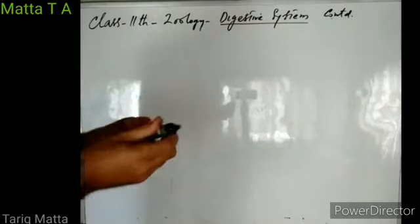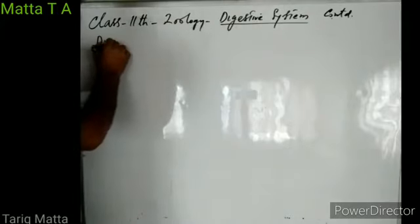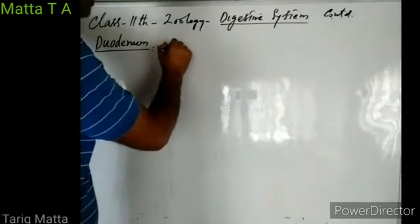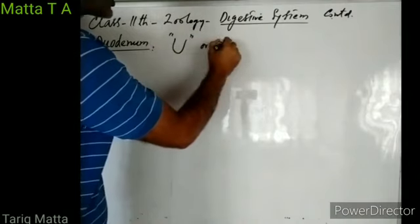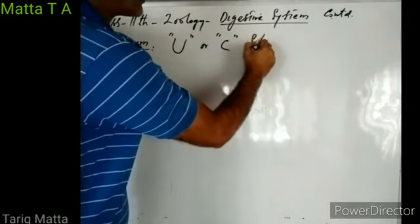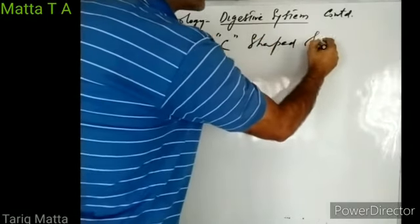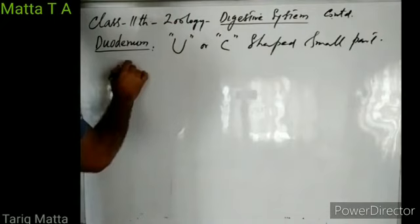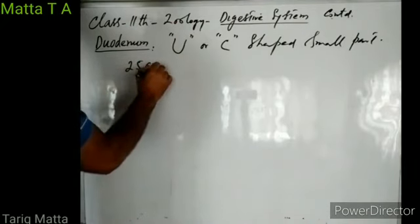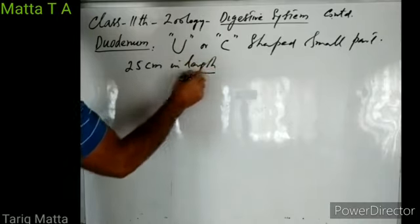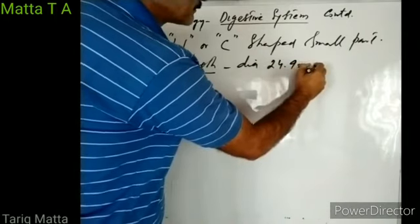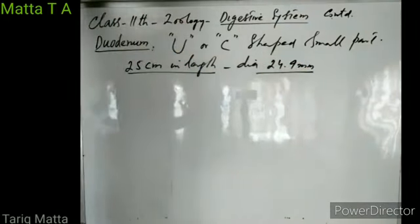Let us have a look at the duodenum first. As I told you, this duodenum is a somewhat U-shaped part — U-shaped, or some call it C-shaped. It measures just 25 centimeters in length and has a diameter of 24.9 millimeters. So it is short and wide.